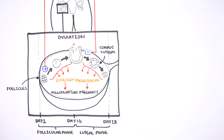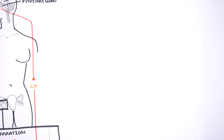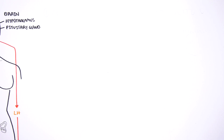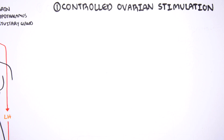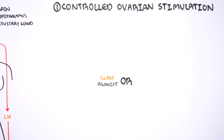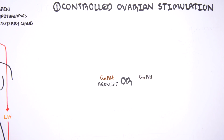Interestingly, this degeneration of the corpus luteum stops if there is successful fertilization, in order to keep the production of the pregnancy hormone progesterone. In vitro fertilization is a method to help infertile couples achieve conception. In vitro fertilization can be divided into five steps. The first step is controlled ovarian stimulation, using gonadotropin-releasing hormone agonists or gonadotropin-releasing hormone antagonists.